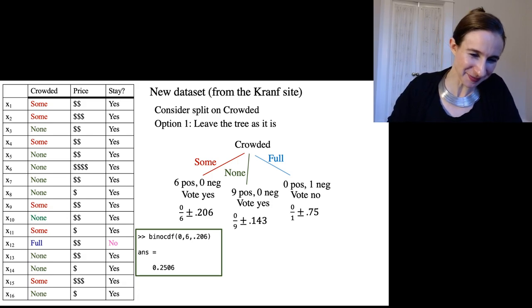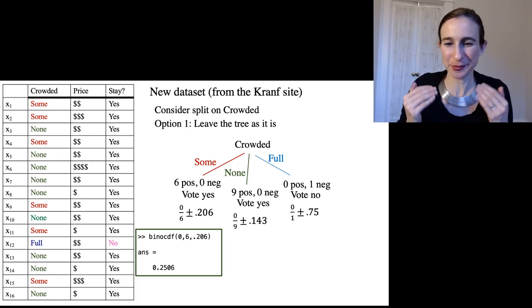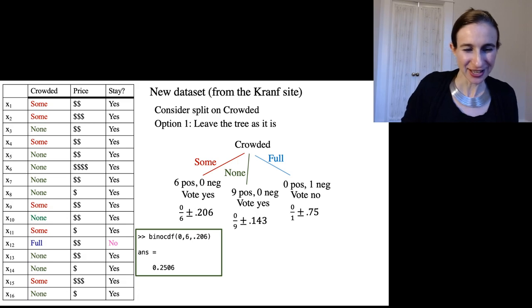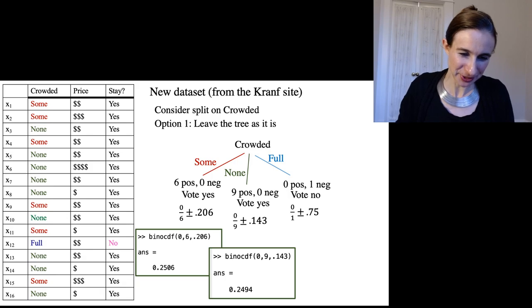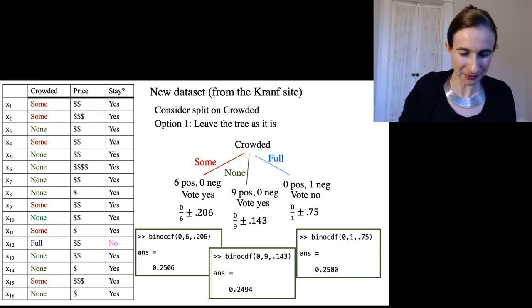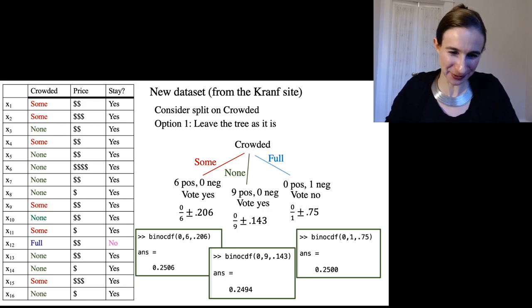Okay, so this is me issuing the binomial distribution CDF command in MATLAB. And I put in the zero and the six. And I put in the answer, which was 0.206. And what I should get out of this if I did it right is a 0.25 because alpha is 0.25. And as you can see, it's pretty good. And then again, I should get a 0.25 for this one and for that one. And as you can see, these numbers make sense. So even if you don't believe me, you can at least believe MATLAB that these numbers all work out correctly.